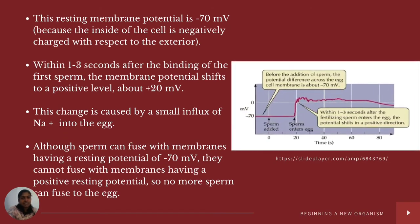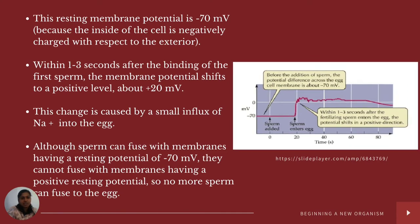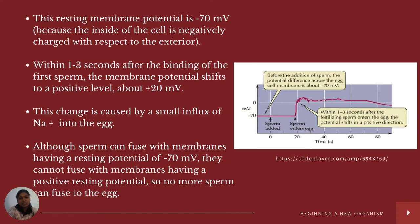The resting membrane potential is normally minus 70 millivolts because the inside of the cell is negatively charged relative to the exterior. Within one to three seconds after binding of the first sperm, the membrane potential shifts to a positive level — changing from minus 70 to plus 20 millivolts. This change is caused by a small influx of Na⁺ ions into the egg. Although sperm can fuse with membranes having a negative resting potential, they cannot fuse with membranes having a positive resting potential, thus blocking additional sperm from fusing with the egg.